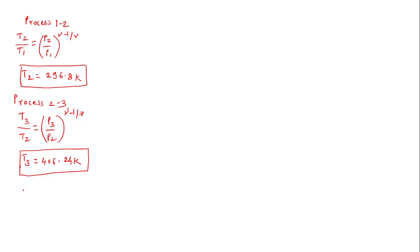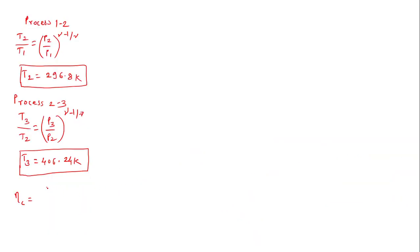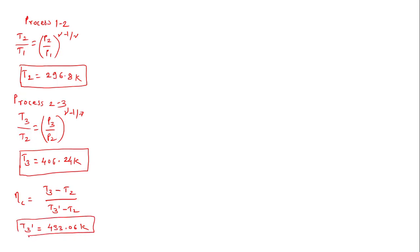Using the compressor efficiency formula: efficiency equals minimum difference upon maximum difference, which is (T3 minus T2) upon (T3-dash minus T2). The efficiency is given as 80 percent, and T3 and T2 are known, so T3-dash can be calculated. T3-dash comes out to be approximately 433.06 Kelvin.